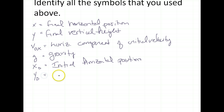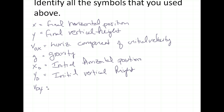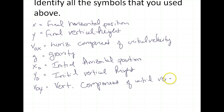Y naught is initial vertical height. V naught y is the vertical component — there's that word again — the vertical part of initial velocity. And we'll never use the word 'part'; we're always going to call it 'component.' You've just got to get used to that physics vocabulary. And then, of course, everybody's favorite: t — time. So those are all the symbols used in those equations above.